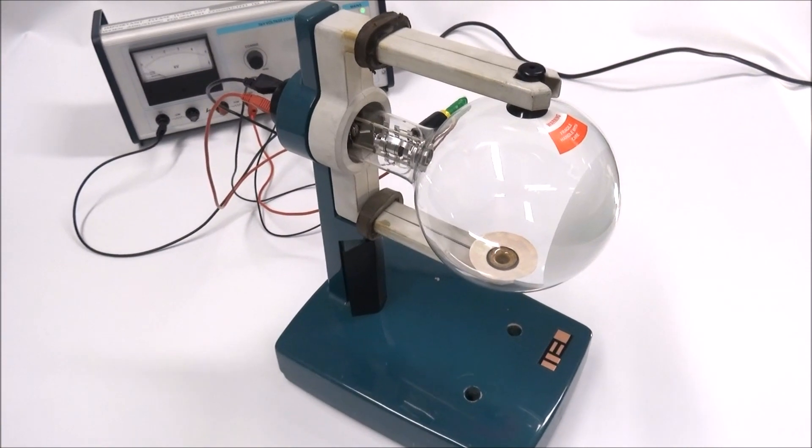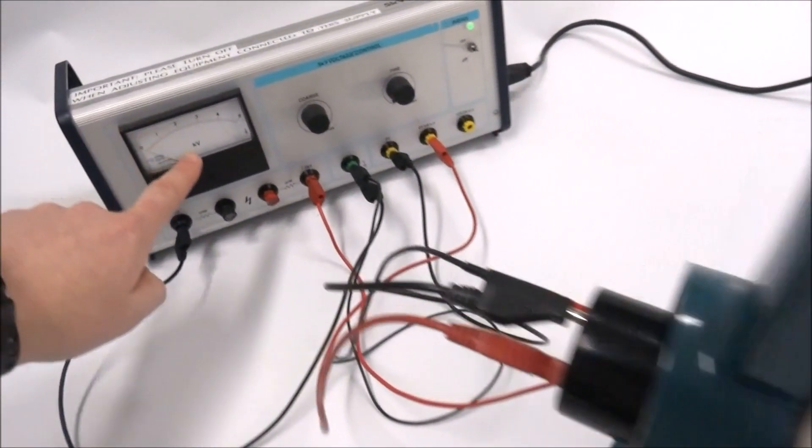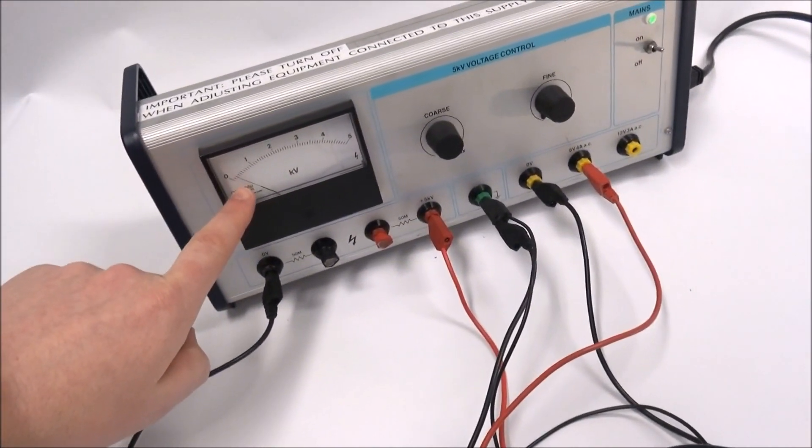So this is equipment we can use to look at electron diffraction. What we have over here is an EHT power supply which goes up to several thousand volts.